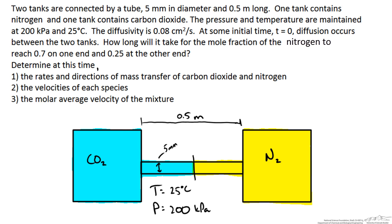In this screencast we are going to look at an example of mass transfer through diffusion, a specific case of diffusion, that of equimolar counter current diffusion between two species. We are going to do this through an example problem.